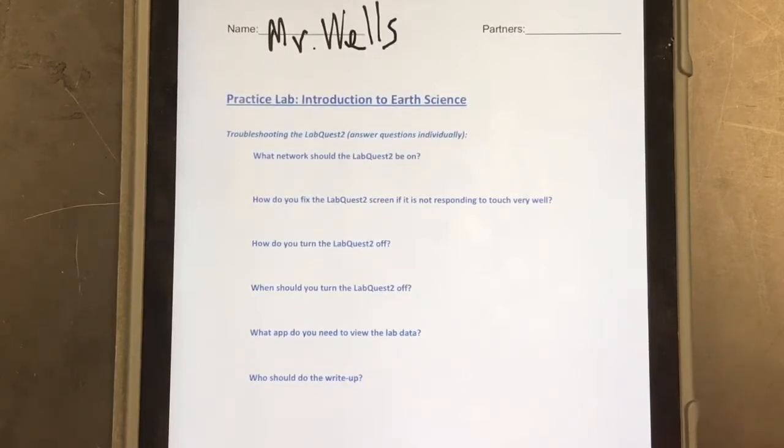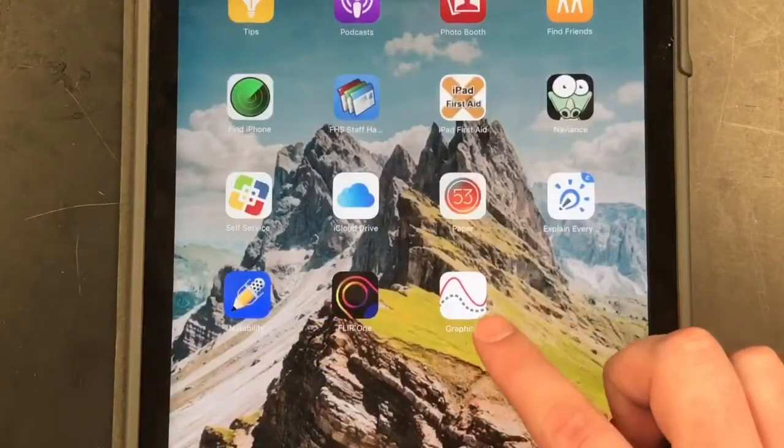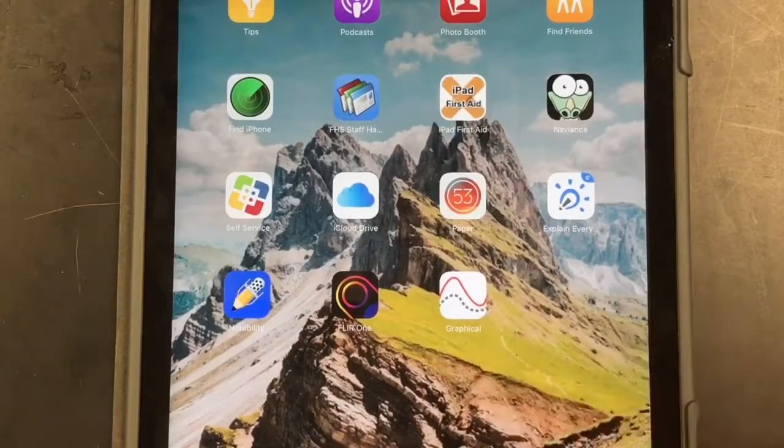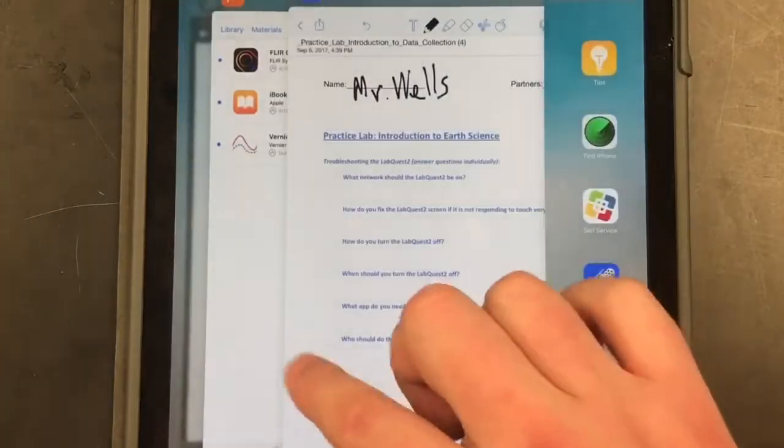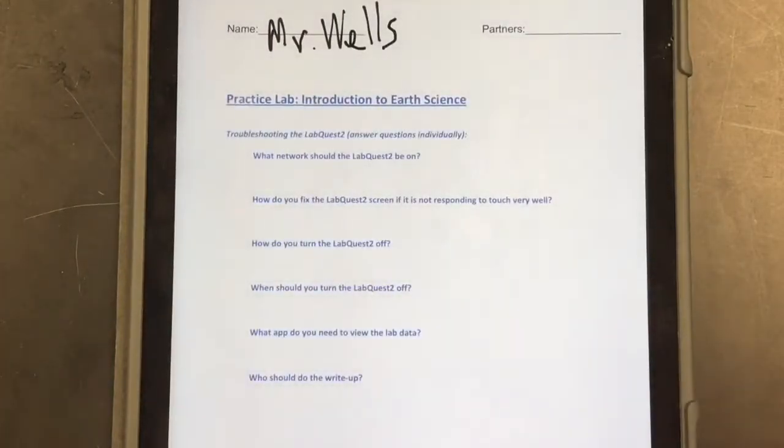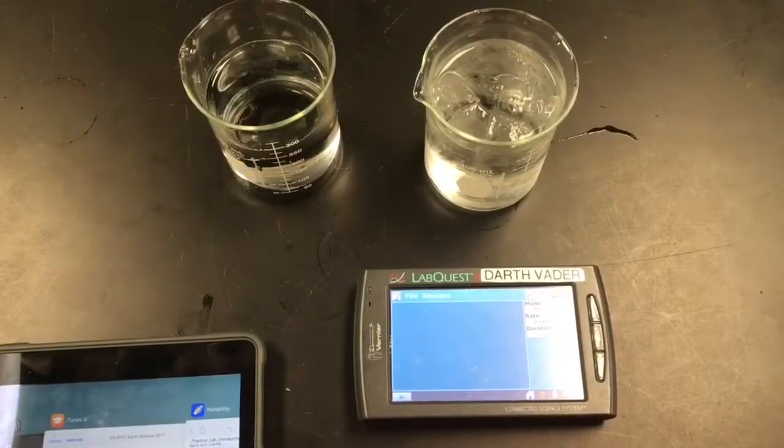And then what app do you need to view the lab data? That's the Vernier Graphical Analysis. So once you have that downloaded from the iTunes U, that's your graphical analysis app right here. And then who should do the write-up? This is really important. Everyone should do the write-up. Everyone in your lab group should be doing their own write-up. You shouldn't be sharing one lab PDF between the two or three of you.